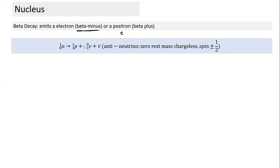This electron goes out of the nucleus. It is not an orbital electron — it is generated inside the nucleus and is called a beta particle. In addition to the electron, an anti-neutrino is also emitted. Anti-neutrino is a particle with zero rest mass and no charge but has spin. It is denoted by nu-bar.